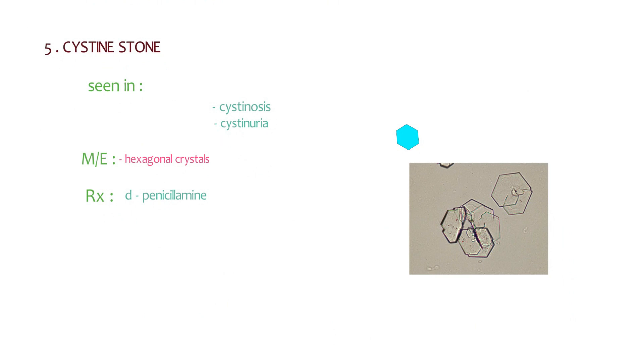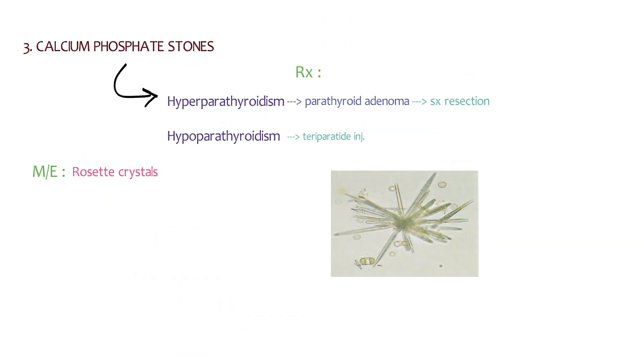In cysteine, there are hexagonal crystals, and in calcium phosphate stones, which appear like rosette in shape. So these are some images which can be asked in your exams as image-based questions.